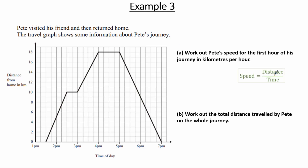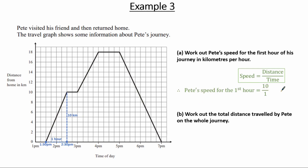In part A, we need to work out Pete's speed for the first hour of his journey in kilometers per hour, using speed equals distance over time. Pete's journey starts at 1:30 p.m., and the first hour brings us to 2:30 p.m. The distance covered in the first hour is 10 kilometers, so Pete's speed equals 10 divided by 1, which equals 10 kilometers per hour.